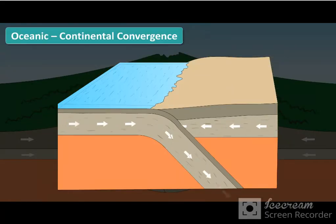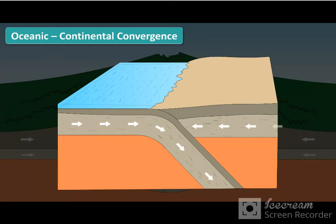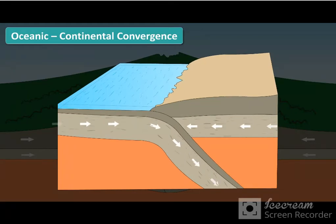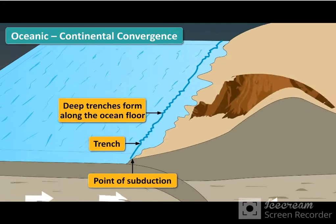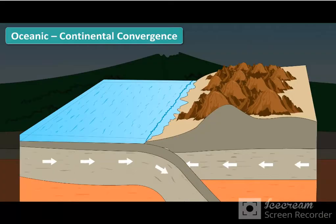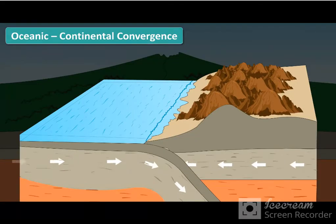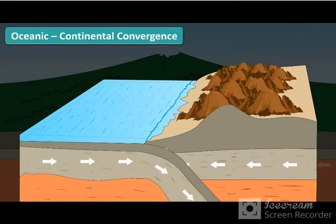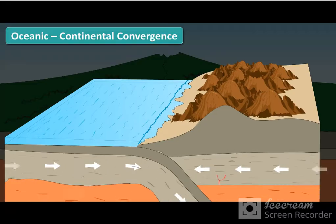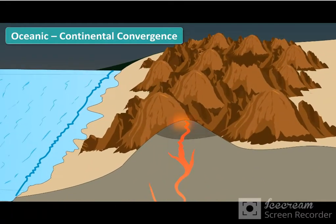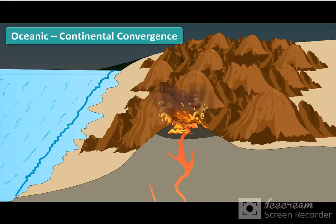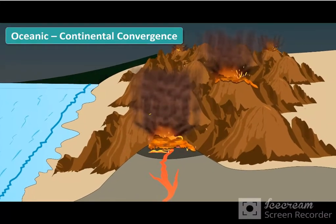When a continental and an oceanic plate collide, the denser oceanic plate is forced below. At the point of subduction, deep trenches form along the ocean floor. The plate which is forced down melts and turns into magma. This hot liquid magma rises through the Earth's surface and leads to the formation of a chain of volcanic mountains along the edges of the continental plate.